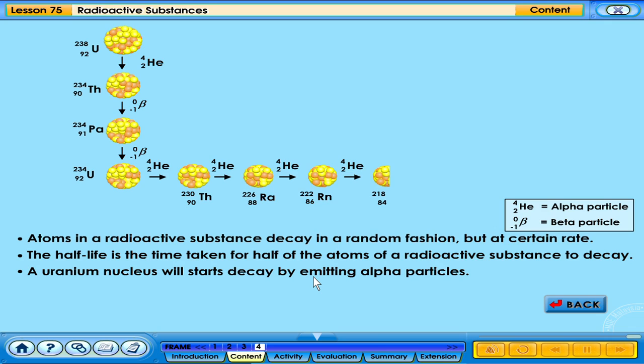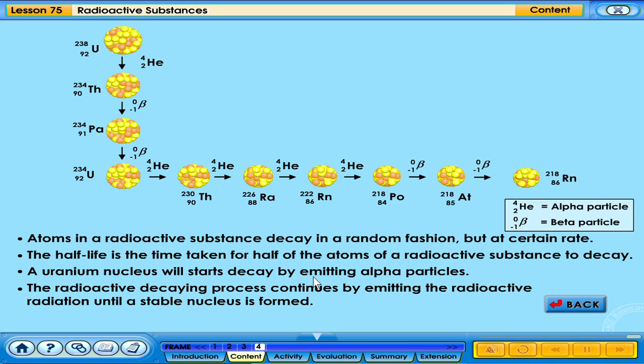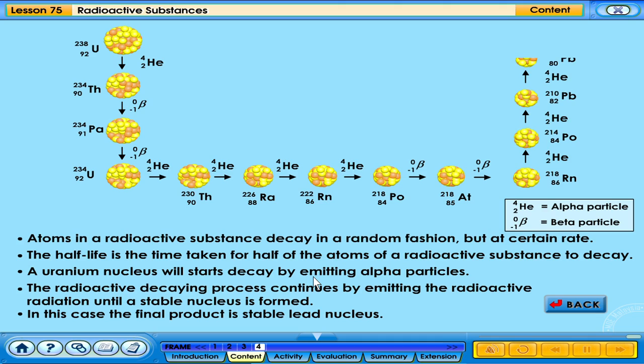A uranium nucleus will start decaying by emitting alpha particles. The radioactive decaying process continues by emitting the radioactive radiation until a stable nucleus is formed. In this case, the final product is a stable lead nucleus.